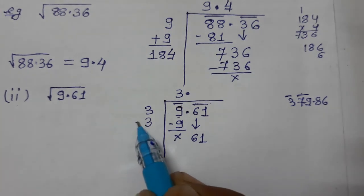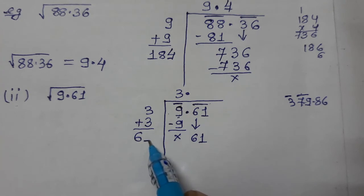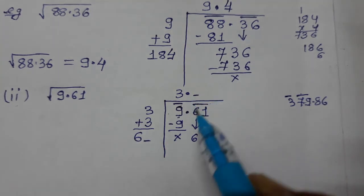Next step, we know, you have to add 3 plus 3. How much? 6. Now we have to put one blank here.